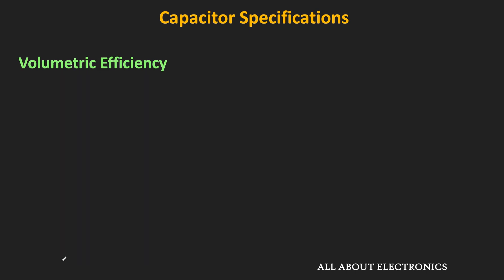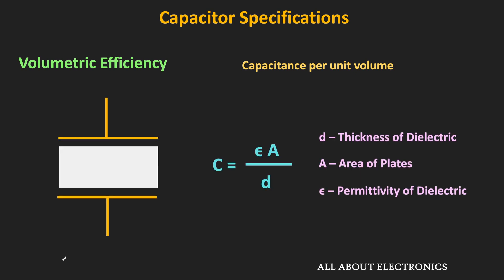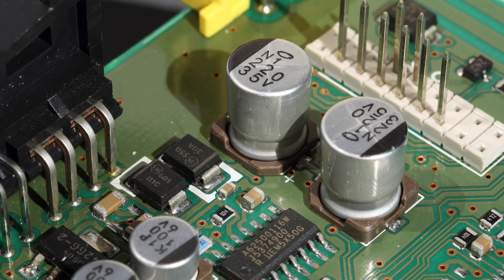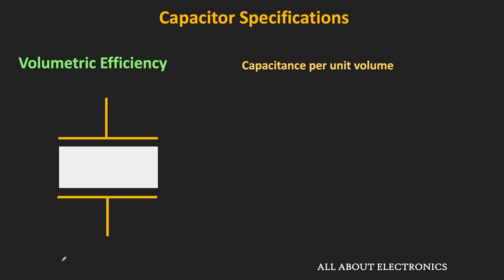The next parameter is volumetric efficiency, which defines the capacitance per unit volume. This volumetric efficiency depends on the dielectric medium of the capacitor as well as the thickness of the dielectric medium. It is a very important aspect when there is a size constraint in circuit design. Volumetric efficiency is measured as a CV product per unit volume, where C stands for capacitance value and V stands for rated voltage. Over the years, due to improvements in the manufacturing process, the volumetric efficiency of different types of capacitors has improved significantly.